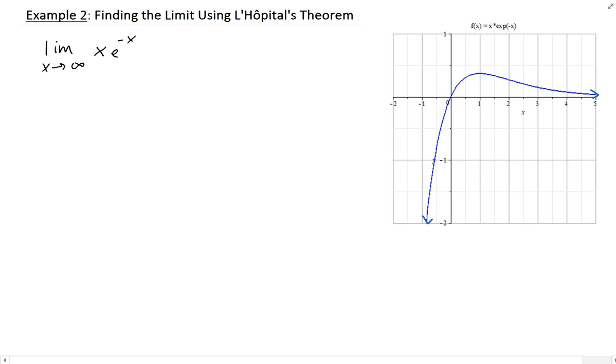Just like before, you want to do a direct substitution. We evaluate this as x goes to infinity, which gives infinity times e to the minus infinity. Since e to the minus infinity equals 1 over e to the infinity which is 0, this gives us infinity times 0.